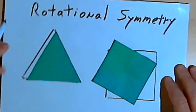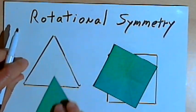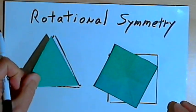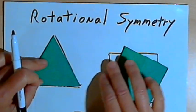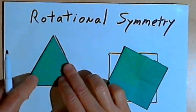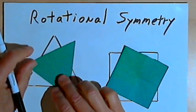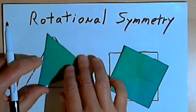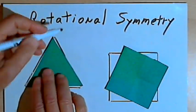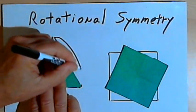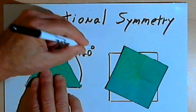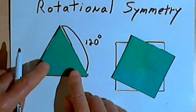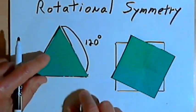So to demonstrate rotational symmetry, I've drawn a triangle and I've cut out a triangle that's the same size and shape. So this is an equilateral triangle. If I take this paper triangle and rotate it 180 degrees, a third of a turn... I'm sorry, 120 degrees is a third of a turn. I can match it up with the triangle that I've drawn.